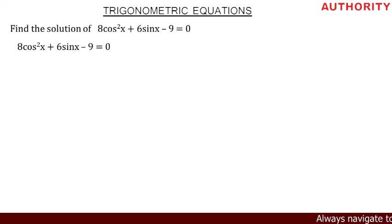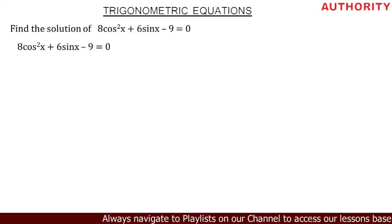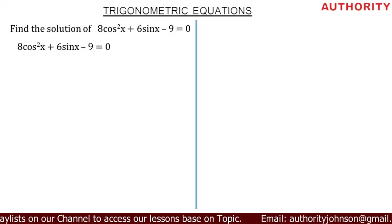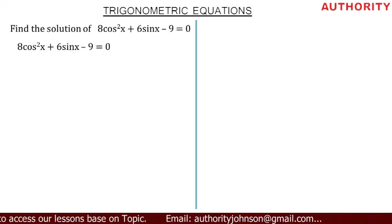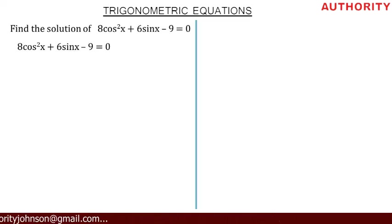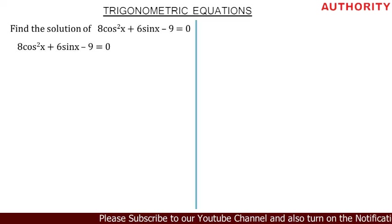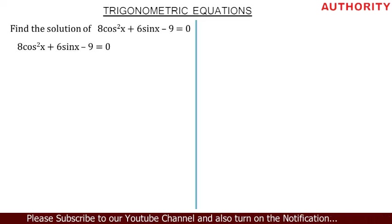Pay attention to what we're going to do. Let's look at the terms — which ones can we work on? There's nothing we can do with 9. Sine x we can't change. But cos²x — yes, we can do something about that. From trigonometric identities, the Pythagorean identity says sin²x + cos²x = 1, so cos²x = 1 − sin²x.